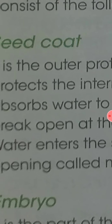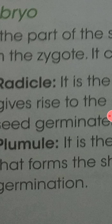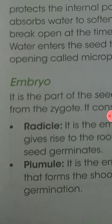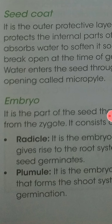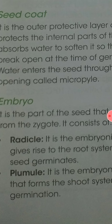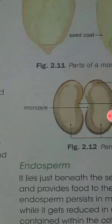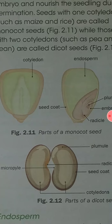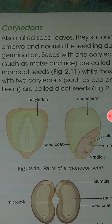Now we look at the parts of the embryo: the radicle and the plumule. It is the part of the seed that develops from the zygote. The radicle gives rise to the root system, and the plumule gives rise to the shoot system. You should draw the structure of a seed in your notebook as well.